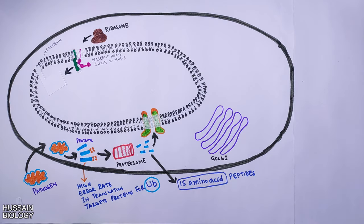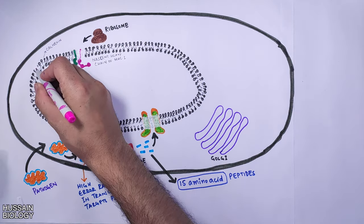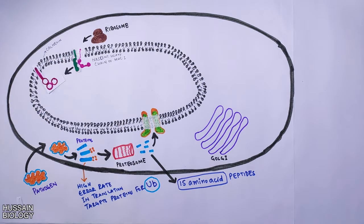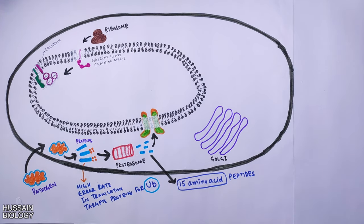Basically, calnexin is a chaperone protein which catalyzes glycoprotein disulfide bond formation and aids in the folding of MHC class alpha chains in the membrane of the endoplasmic reticulum. After that, we get the structure of the MHC molecule as shown in the diagram.